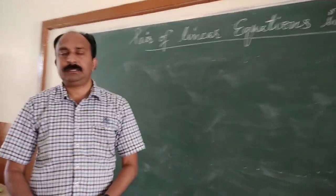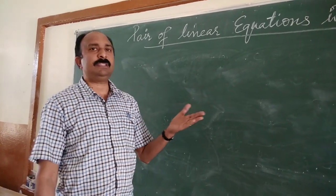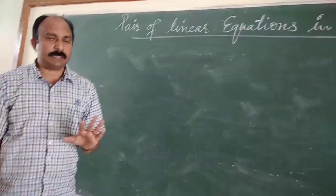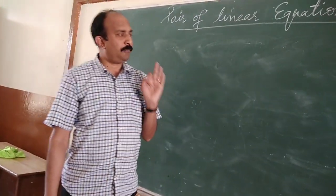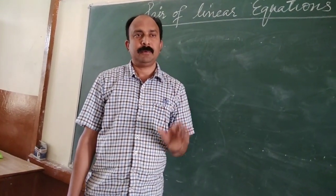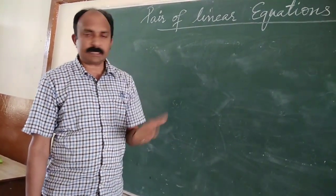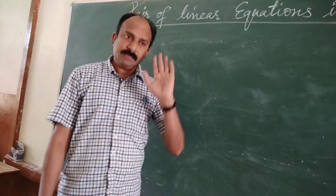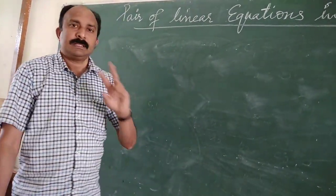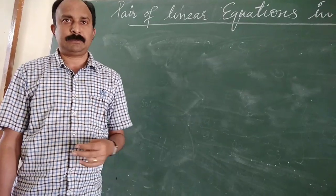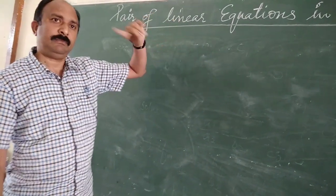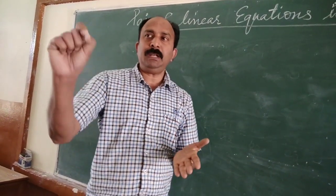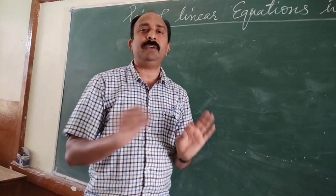Now we are going to discuss the various methods by which we can solve a pair of linear equations. There are many methods; the first method is the graphical method — solving with the help of a graph. In Class 9 we studied how to draw the graph of a single linear equation in two variables. The same method is applied this time for two equations. The graph of a linear equation in two variables is always a straight line.